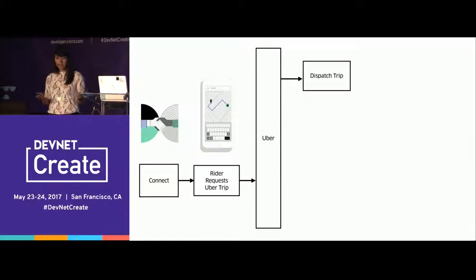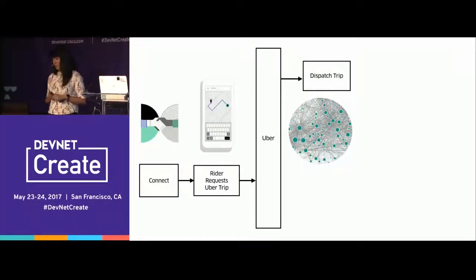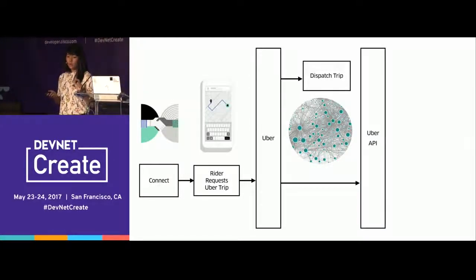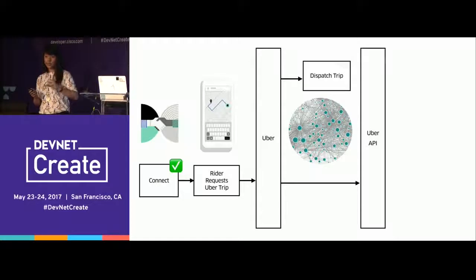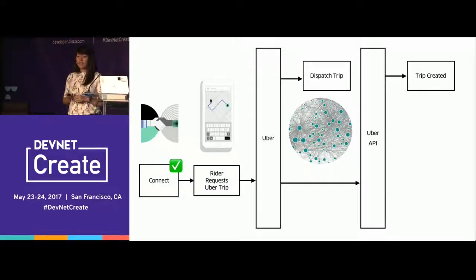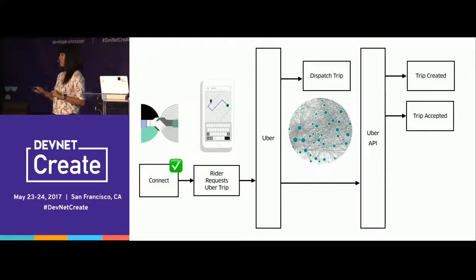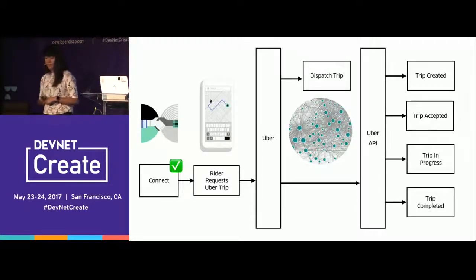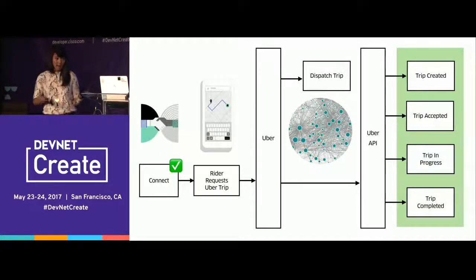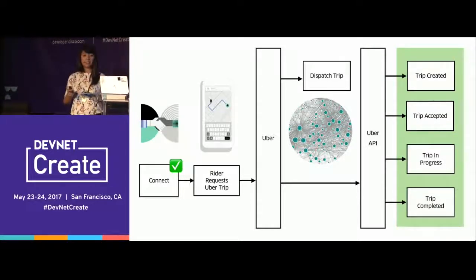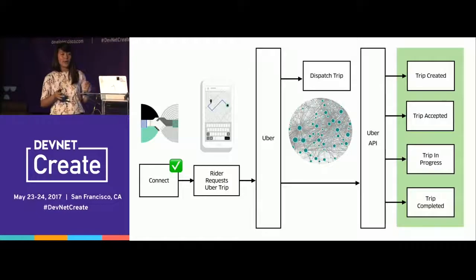Here's how it works: you connect the user's Uber account to your app and get their permission to share their data. At some point the rider requests an Uber ride — through the app or through Alexa, for example. Uber dispatches that trip using its microservices architecture. Then the Uber API detects that the user is on a trip, checks if that user has connected to any third-party apps, and sends webhooks whenever the ride status changes: trip created, accepted, in progress, and completed.